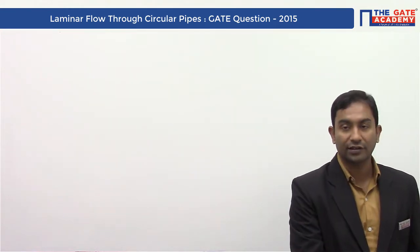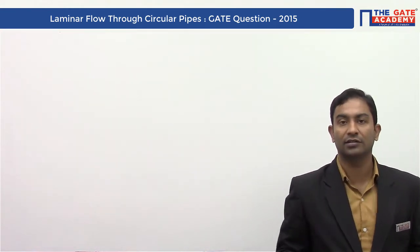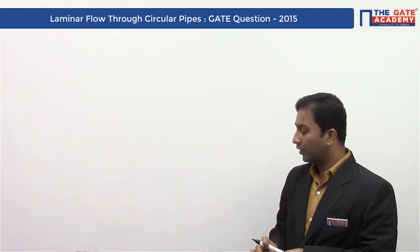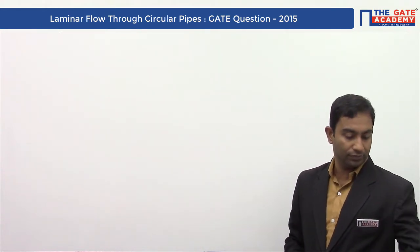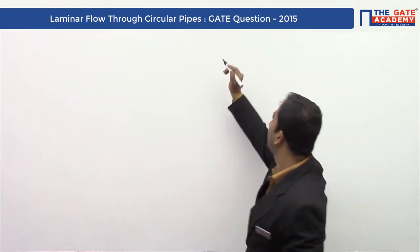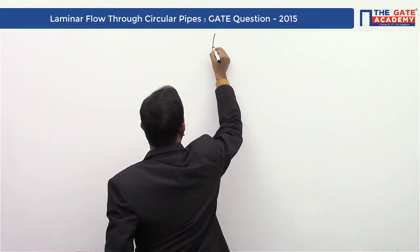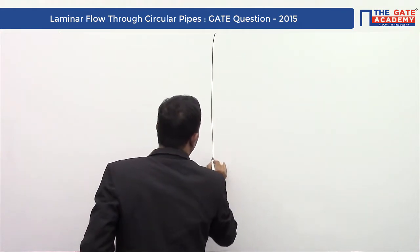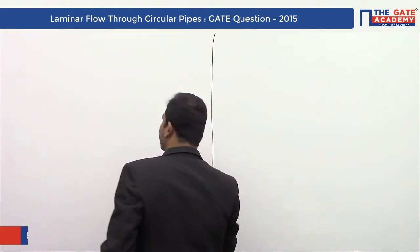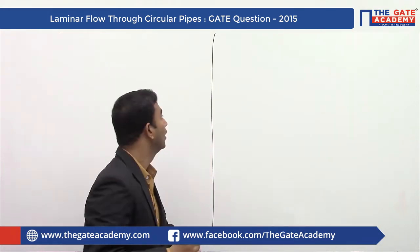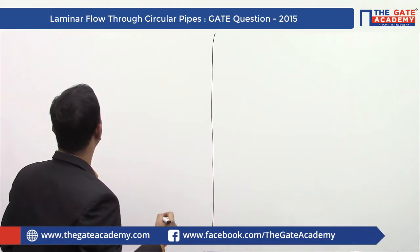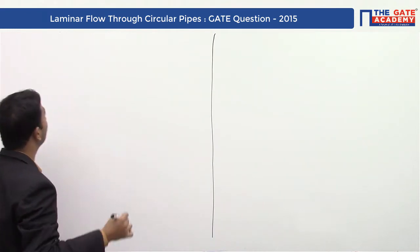Okay friends, this is the question. It is given to us that — first let me draw this. We are asked to find out the velocity at a radial distance of 0.2 centimeter.